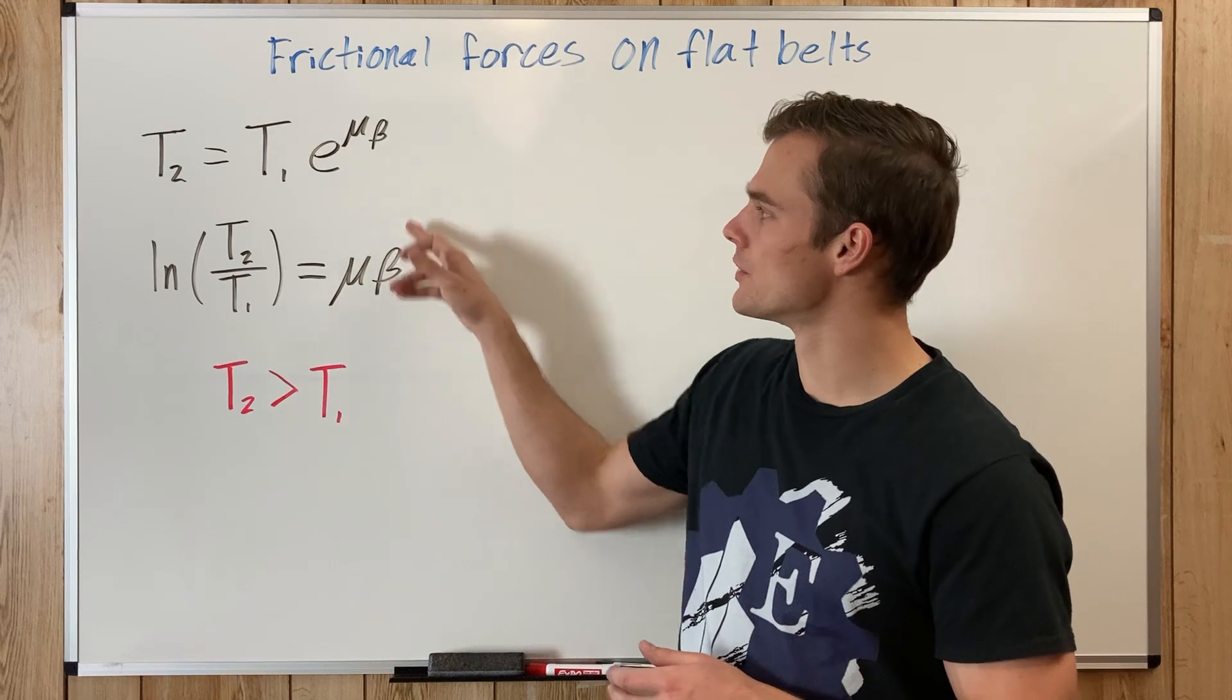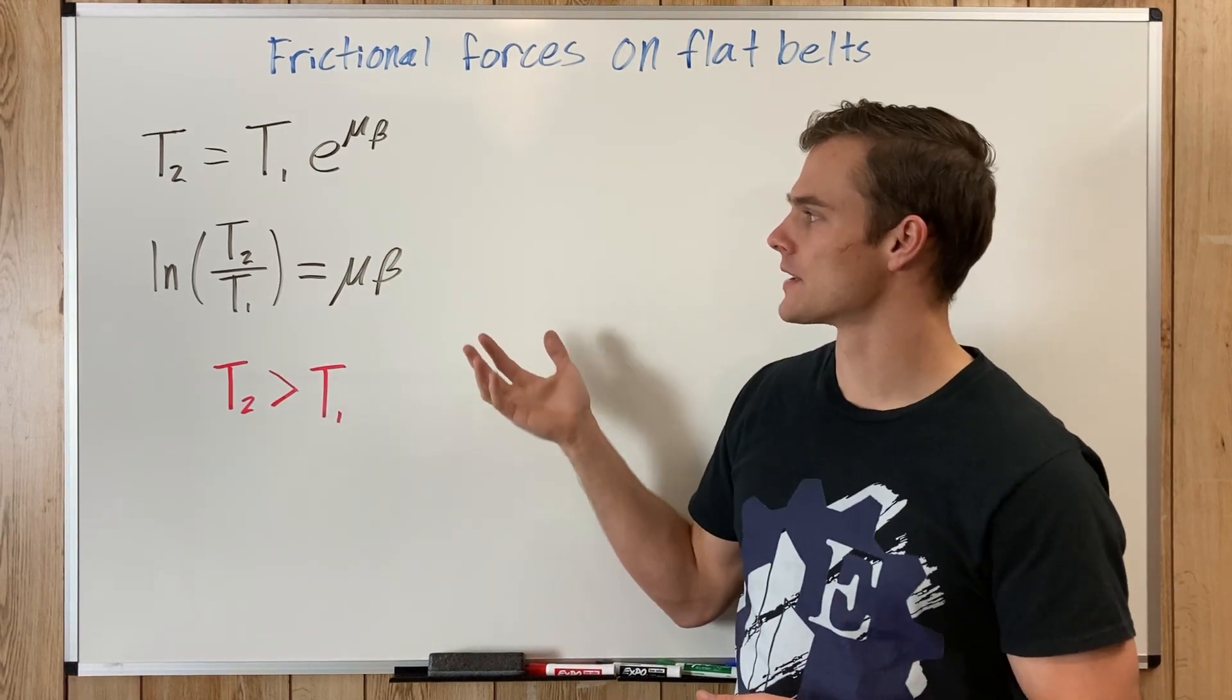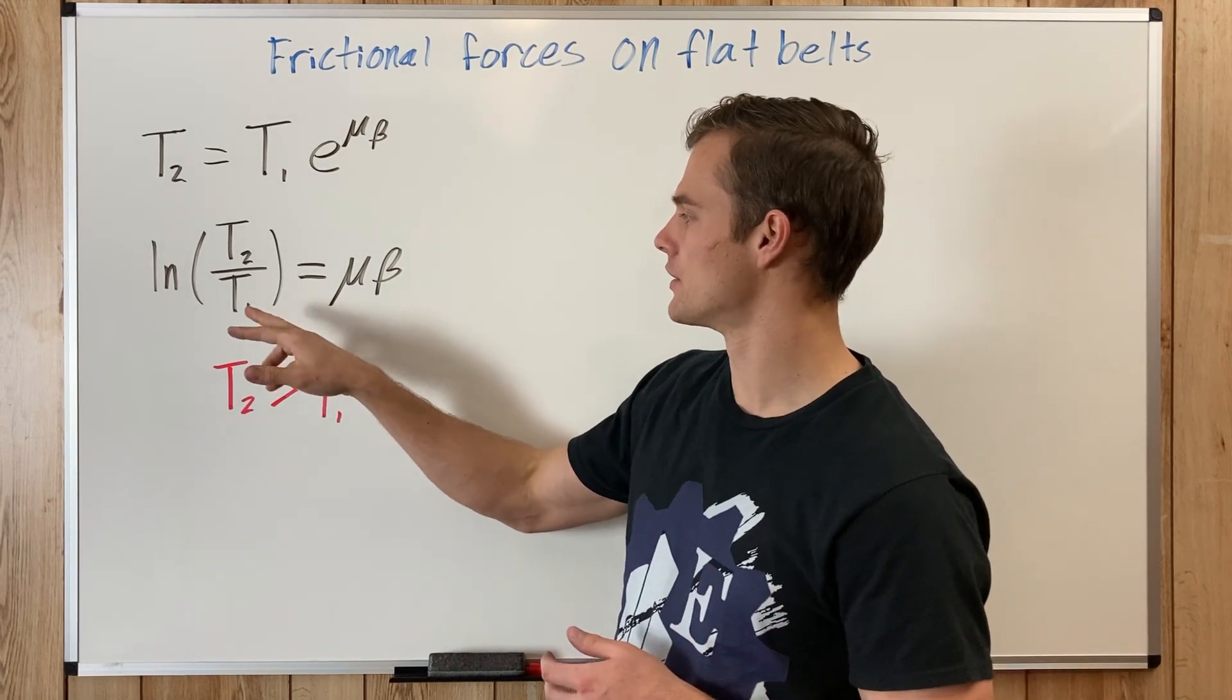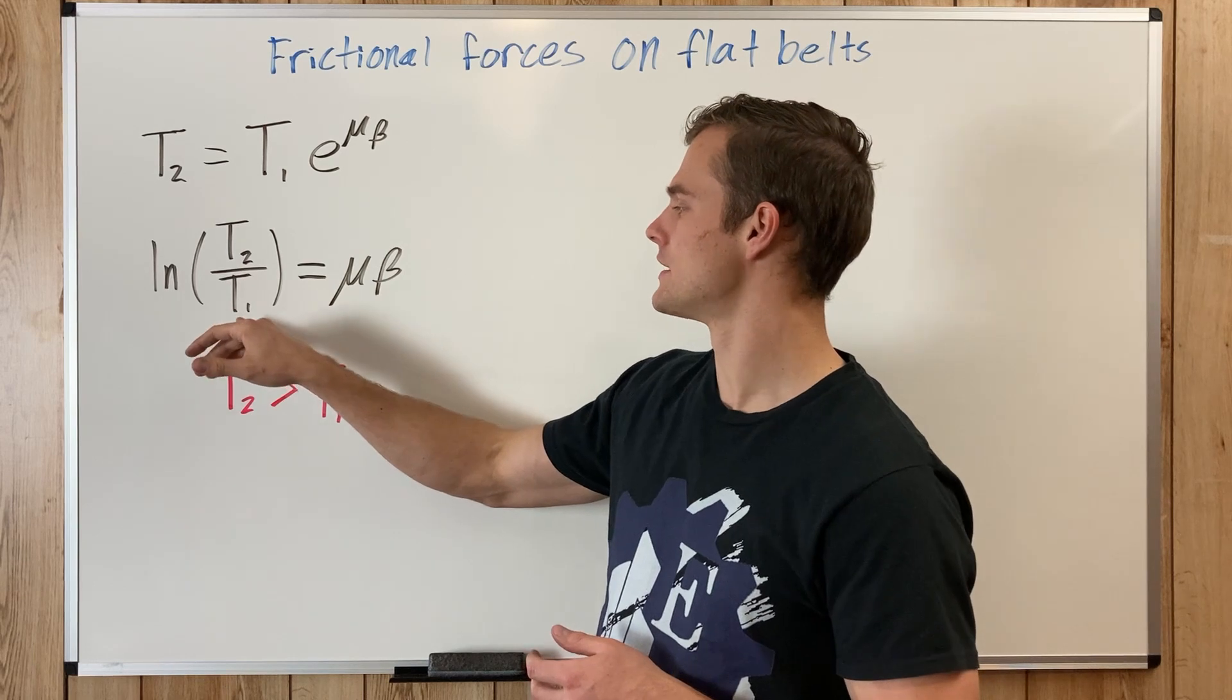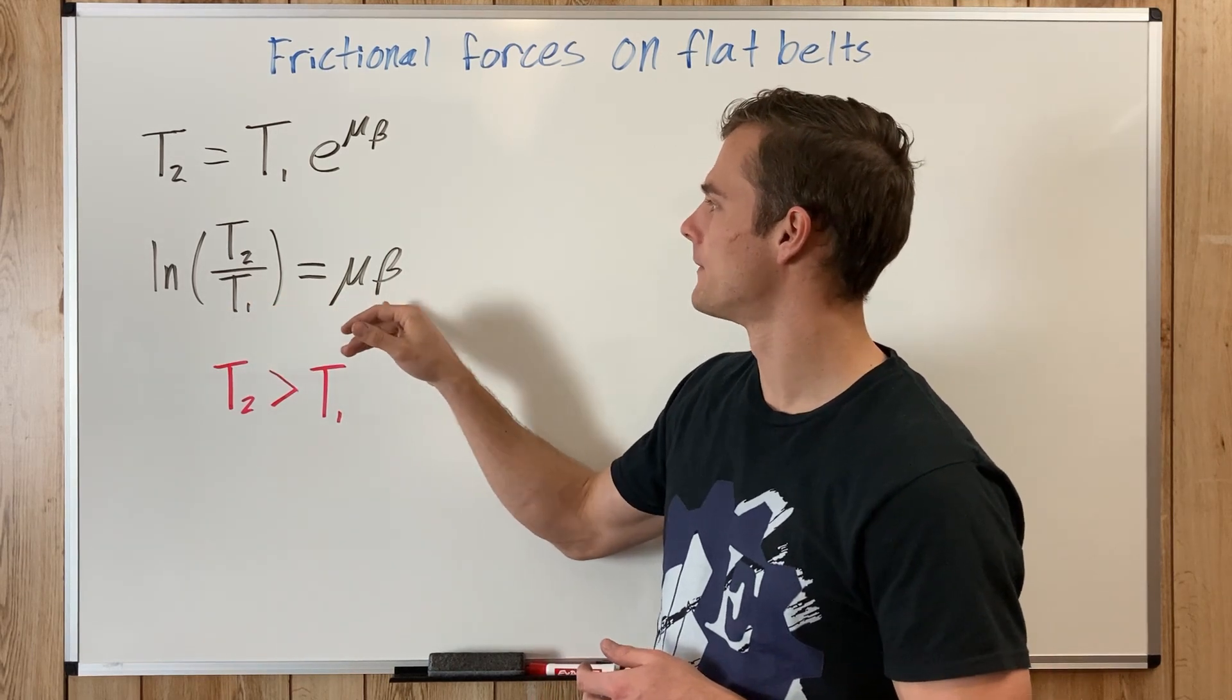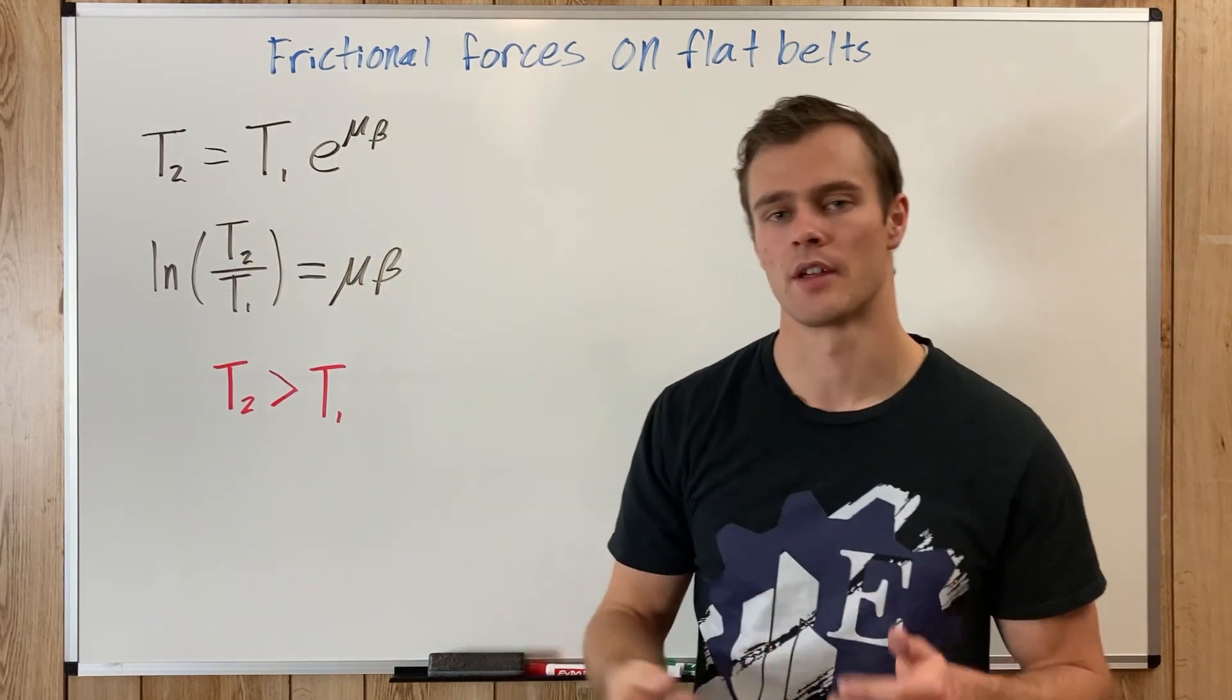These two equations are written out in different forms. I figured I'd include both because they're both useful. This one helps if you know T1 and T2, you can solve for mu or beta. With this one, if you're given one of the two tensions, you can solve for the other.